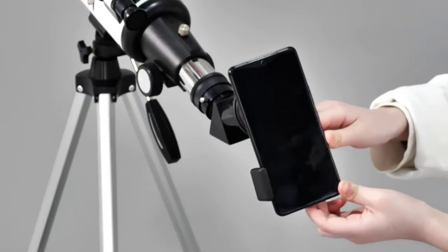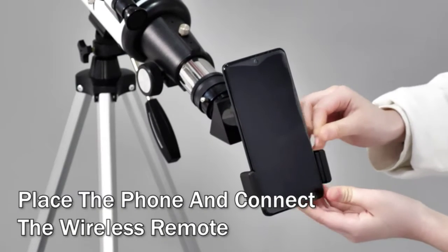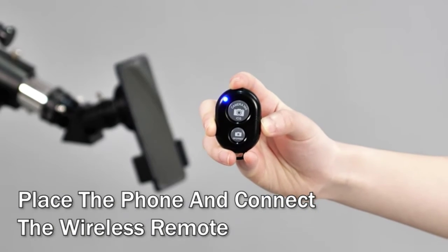The magnifying power of each eyepiece is tripled by a 3x Barlow lens. The moon can be magnified up to 72 or 180 times.